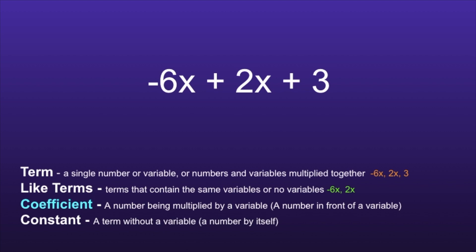Coefficient. A coefficient is a number being multiplied by a variable, or, as I tell my students, the number in front of the variable. In this expression, the coefficients would be negative 6 and 2.